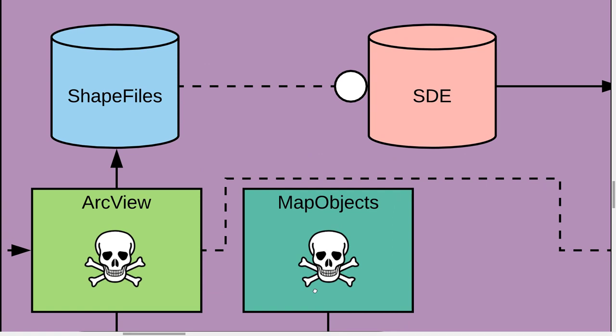ShapeFiles are an ESRI thing. When you work with ShapeFiles you know there are three files: the SHP file with geometry, the DBF file with attributes, and an SHX index file — not spatial — so you can quickly look up where feature 54 starts in the SHP and DBF files without reading the whole file. That concept of three files with a non-arc-node topology means there is redundant data when you have two adjacent lots. There is no topology built into the base ShapeFile format.